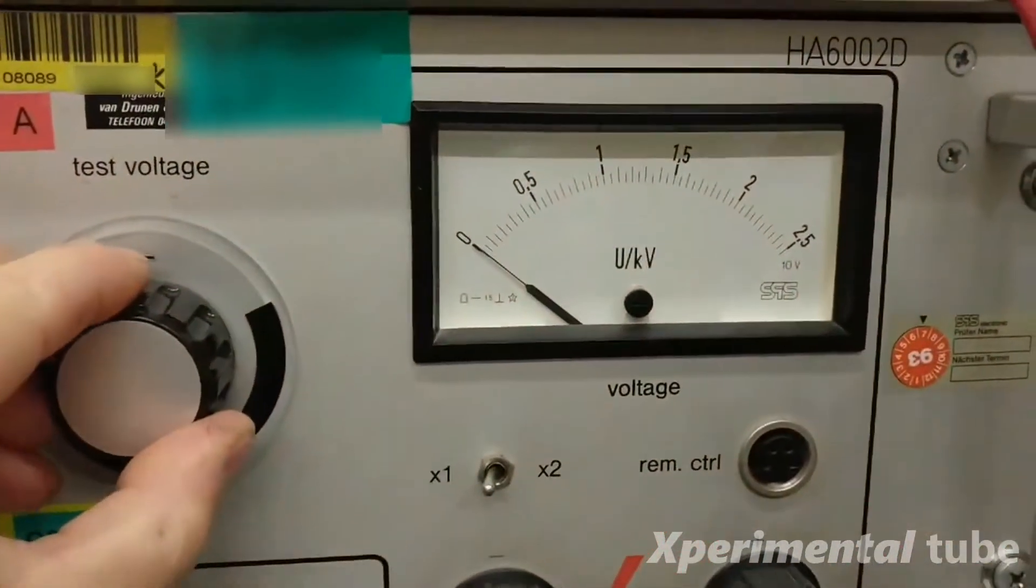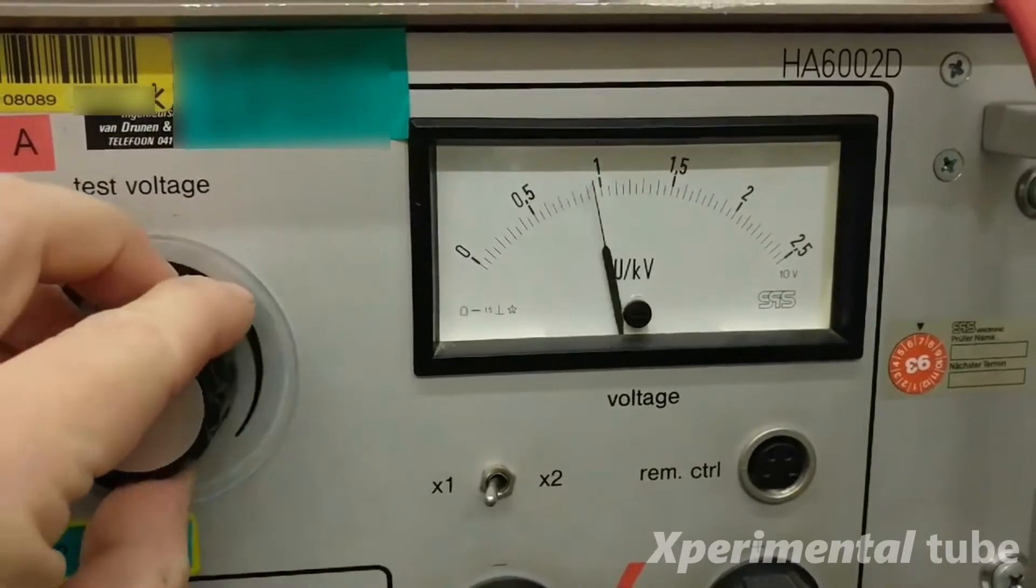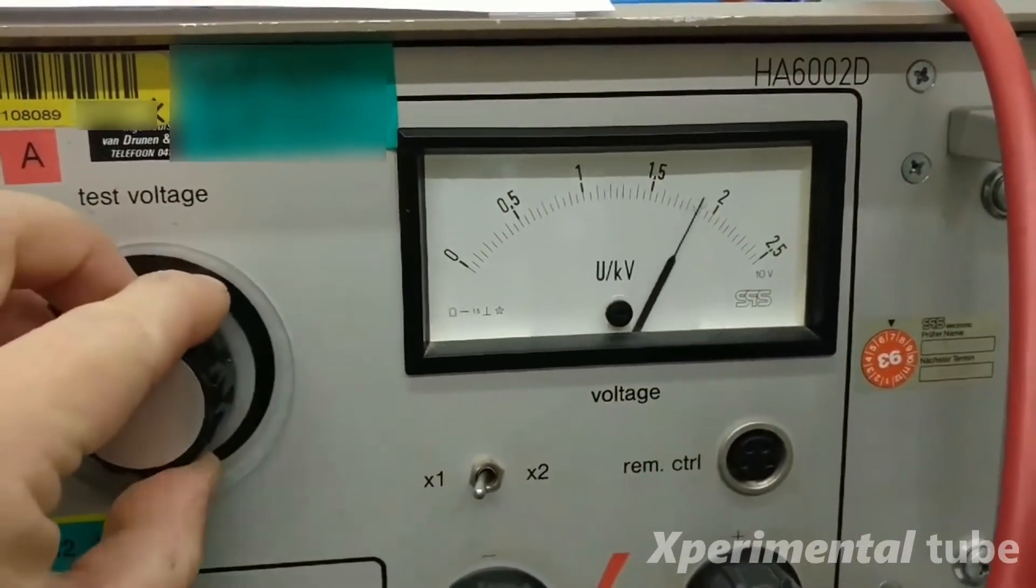So now I'll perform a high voltage test between the low voltage DC and the high voltage AC side. I will do this for one minute with a voltage of 2500 volts.